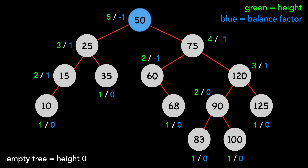Let's take a look at node 50. Its height is 5 because there are 5 nodes on the path from 50 to 83. To find its balance factor, we take the height of its left child minus the height of its right child: 3 minus 4 is negative 1. Please pause the video here if you need some time to review this.